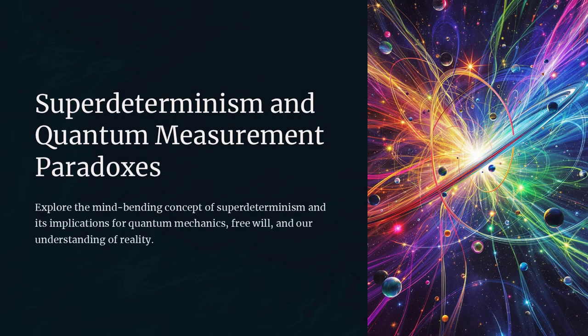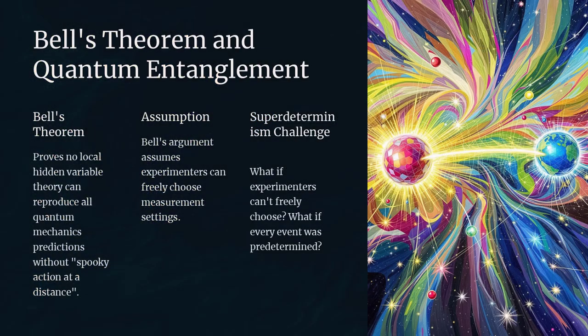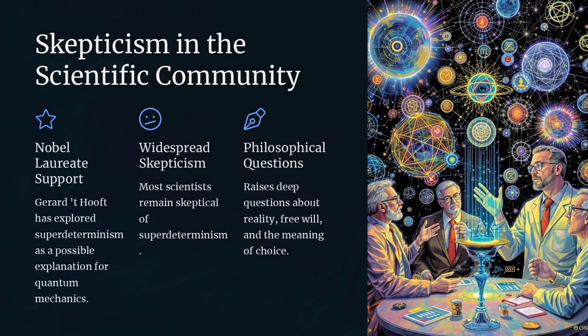The super-determinism paradox challenges one of the fundamental assumptions in quantum mechanics and free will. It suggests that everything, including the choices we make in scientific experiments, might be predetermined by hidden variables.